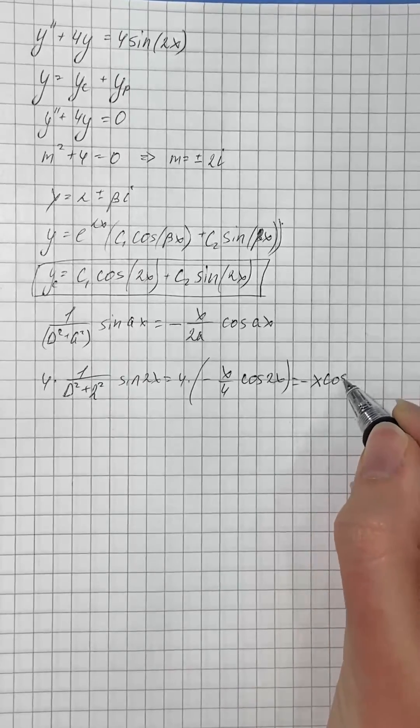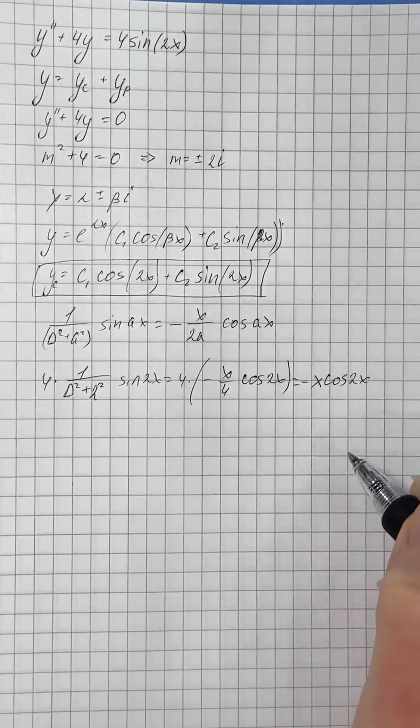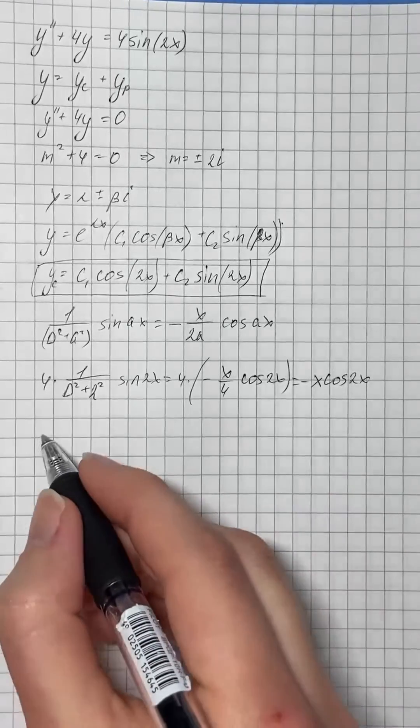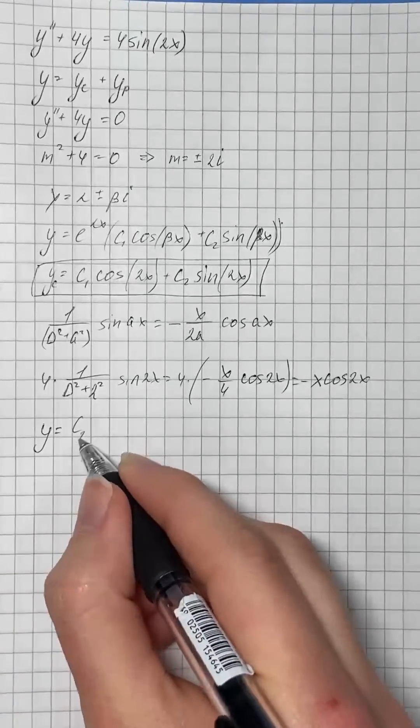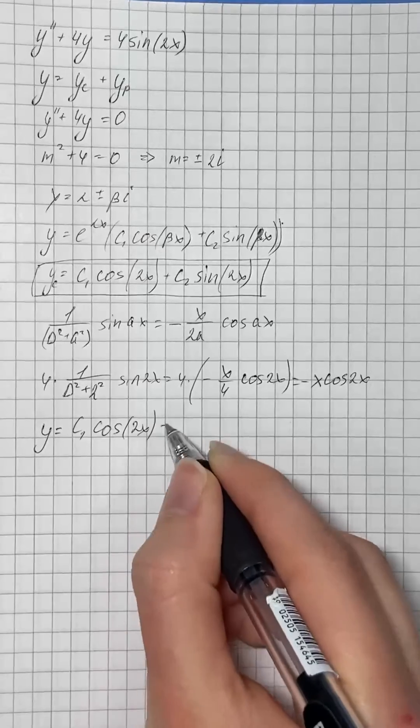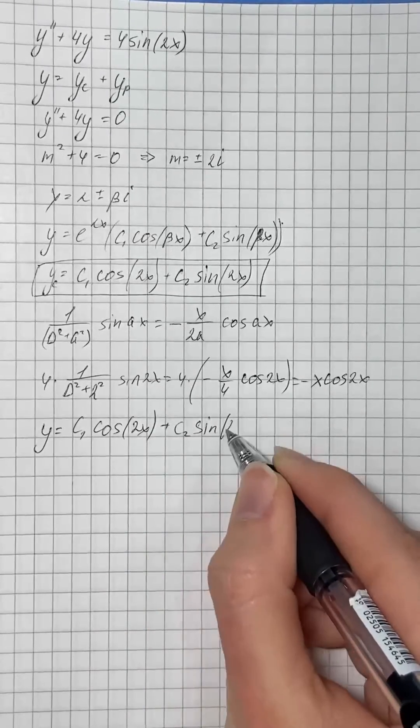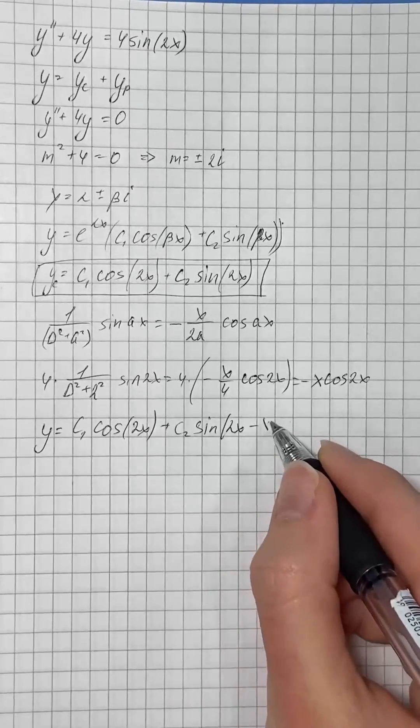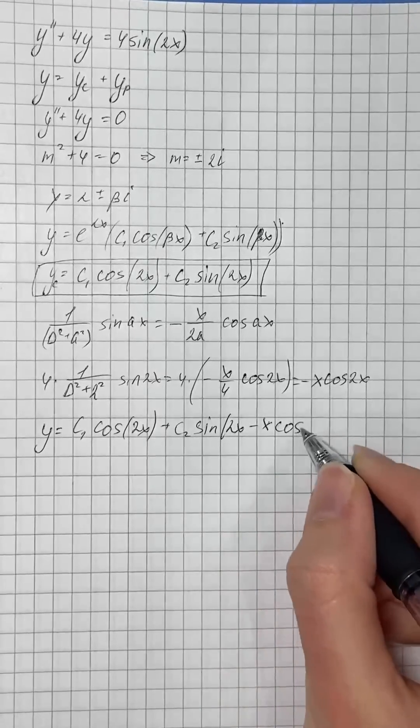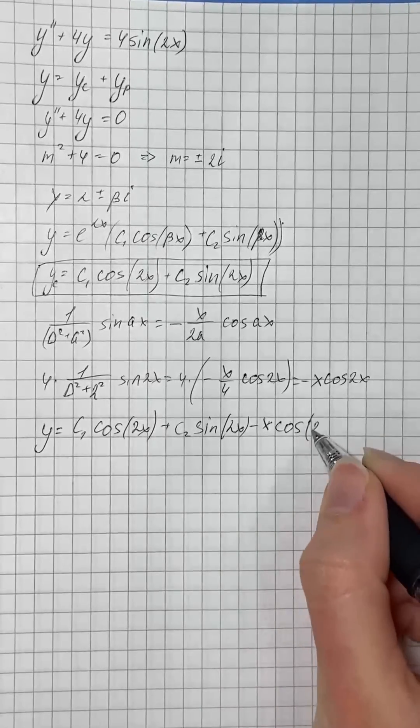So the required solution is c1 times cosine of 2x plus c2 times sine of 2x minus x times cosine of 2x.